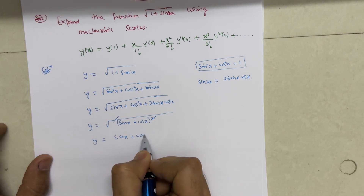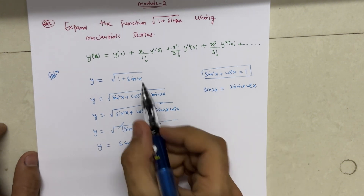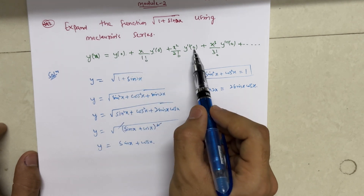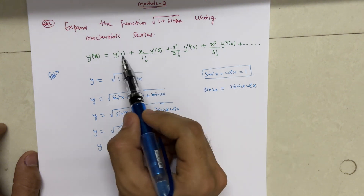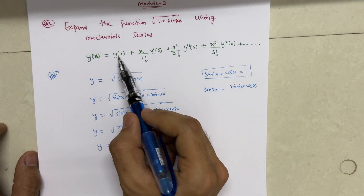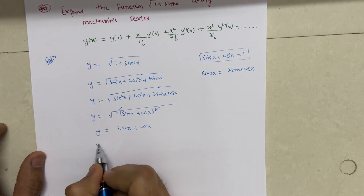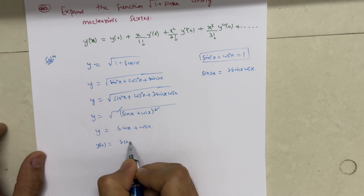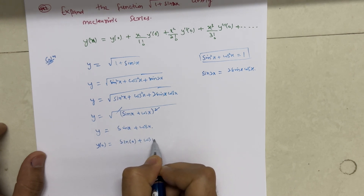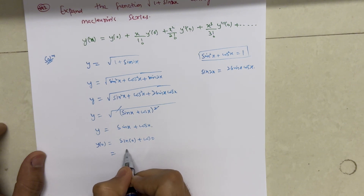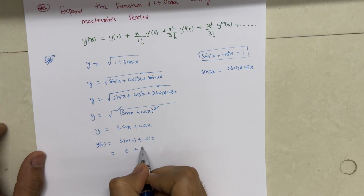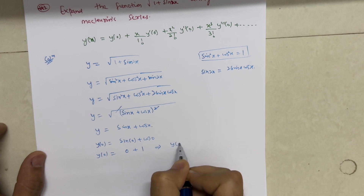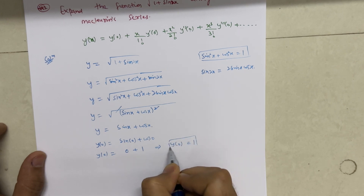The square and root cancel, giving y = sin x + cos x. Now in the Maclaurin series we need y(0), y'(0), y''(0), and y'''(0). To find y(0), we substitute x = 0: y(0) = sin 0 + cos 0 = 0 + 1 = 1. So y(0) = 1.